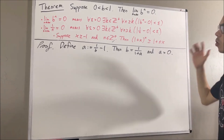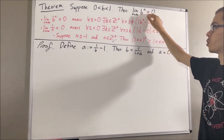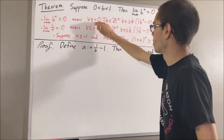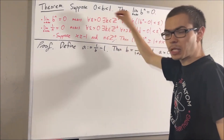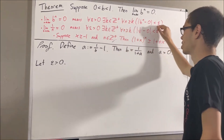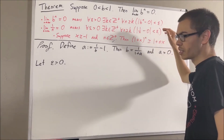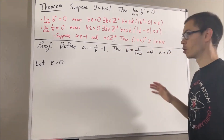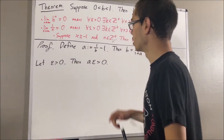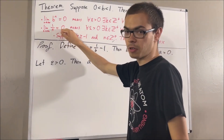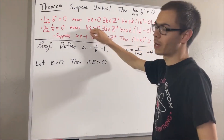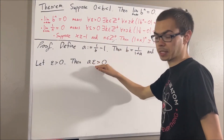Now remember, the whole goal in this proof is to show that b to the power of n converges to 0, which means we want to prove this statement. Since we're trying to prove a statement about every epsilon greater than 0, give me an arbitrary epsilon greater than 0. Since a and epsilon are both greater than 0, a times epsilon is also greater than 0. And now, let's use the fact that we know 1 over n converges to 0, which means this statement is true and works for every positive real number, so it must work for the positive real number a times epsilon.